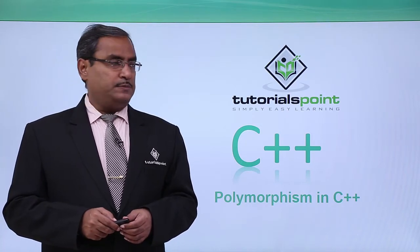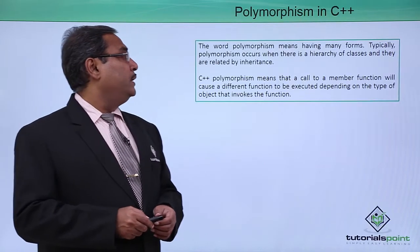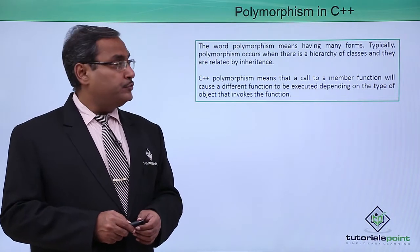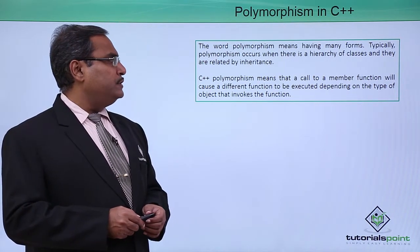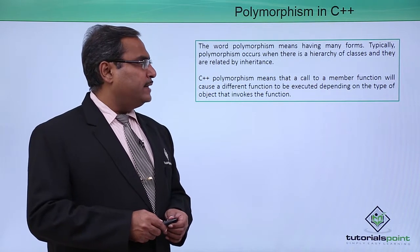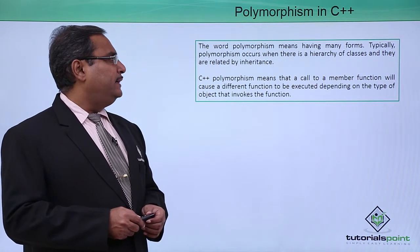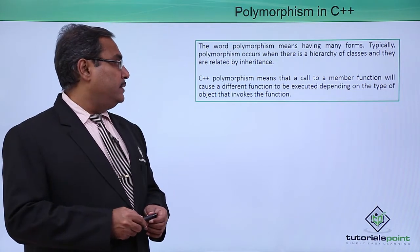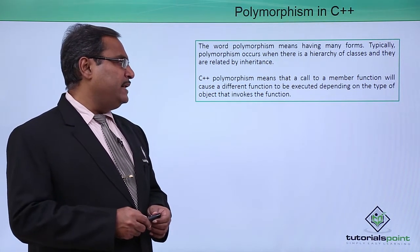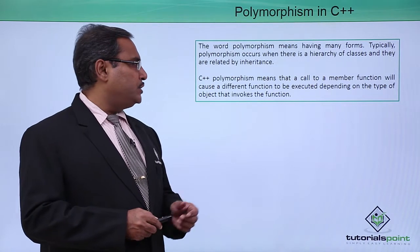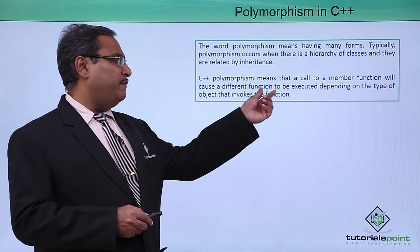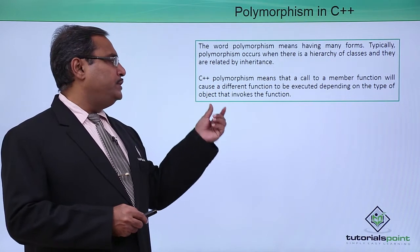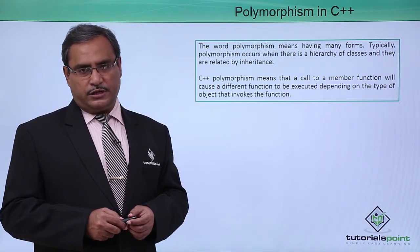Polymorphism in C++. The word polymorphism means having many forms. Typically, polymorphism occurs when there is a hierarchy of classes and they are related by inheritance. C++ polymorphism means that a call to a function will cause a different function to be executed depending on the type of the object that invokes the function.